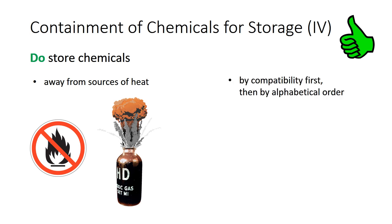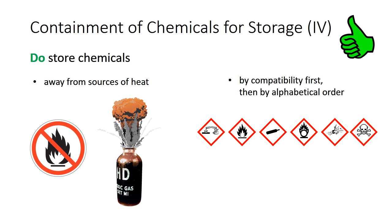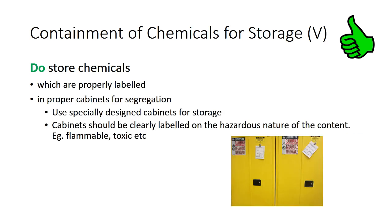Do store chemicals by compatibility first, then by alphabetical order. Storing chemicals only by alphabetical order may lead to incompatible chemicals being stored next to one another, causing a hazard. Chemicals should be grouped based on GHS hazard class and stored based on compatibility. Do store chemicals that are properly labeled, and store them in proper cabinets for segregation. Use specially designed cabinets for chemical storage, clearly labeled with the hazardous nature of their contents — for example, Flammable, Toxic, and so on.